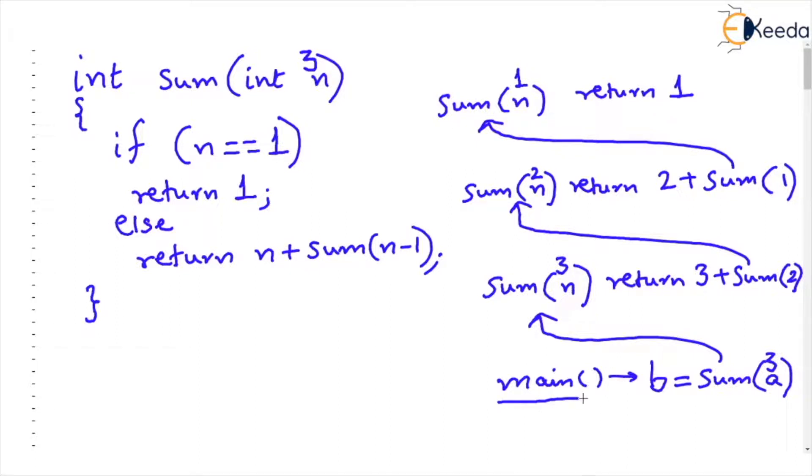Main has called the function as b equals sum a where a is 3. So if you actually run this function sum with n equal to 3, notice that the if statement is going to be false because we are asking is n equal to 1 whereas n is 3.